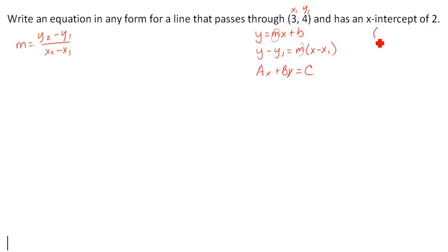So if the x-intercept is 2, that means that the y-value is, that's right, 0. The y-value should always be 0 when you're getting your x-intercept. Okay, we learned that back in the last unit. So now we have a second point, so that's going to be my x2 and y2.